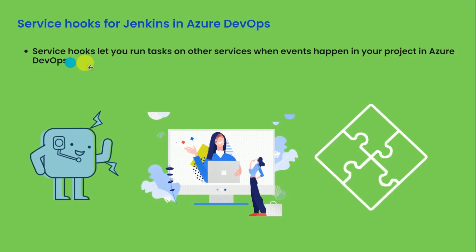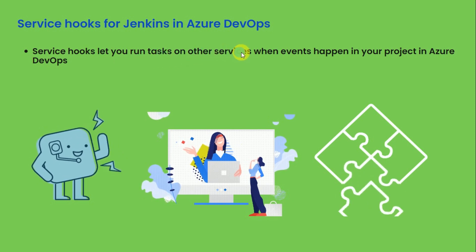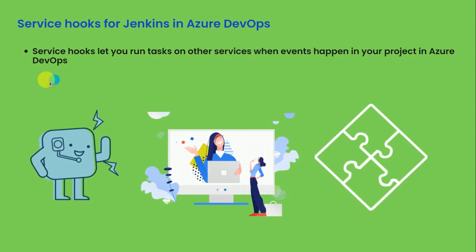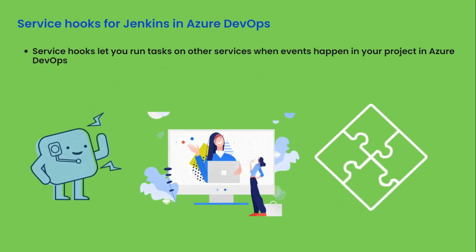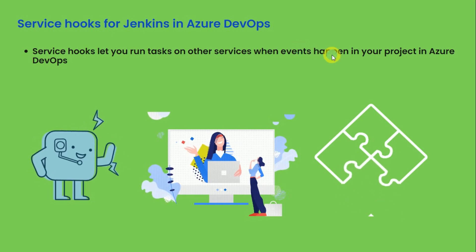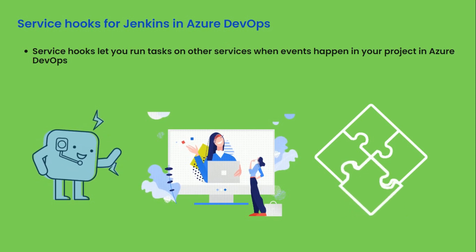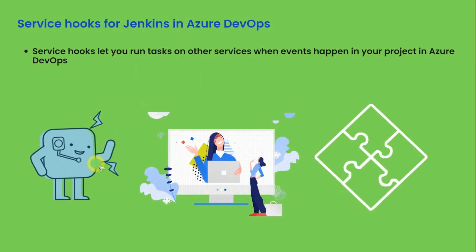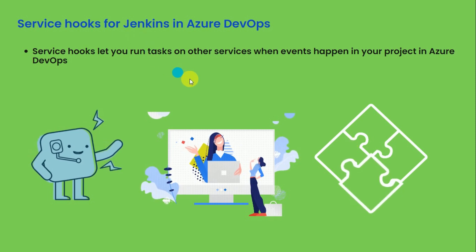So what are service hooks? Basically, service hooks let us run tasks on other services — in this case, on Jenkins — when an event happens in your project in Azure DevOps. That means whenever someone commits code or someone triggers a build on Azure DevOps, that event will trigger the external service to run the task. We have configured our task on Jenkins, so once someone commits code on Azure DevOps and that event is created, it will trigger Jenkins to run and build our pipeline. You will understand this better when we go ahead and create the service hooks.